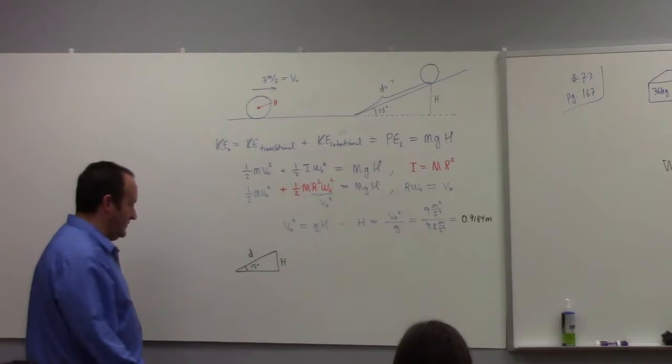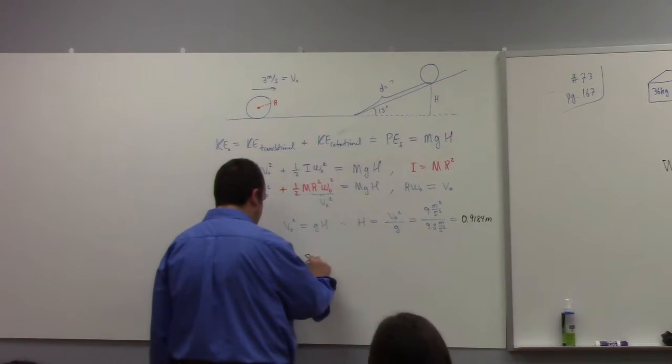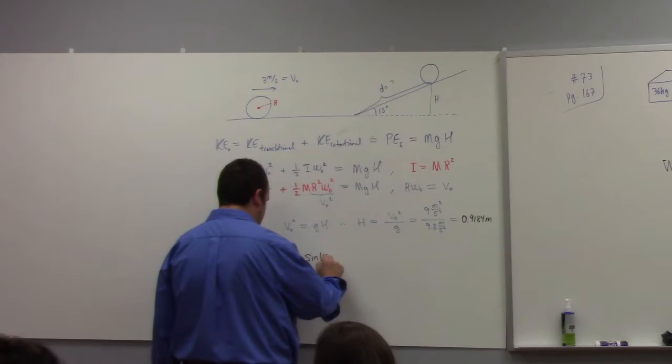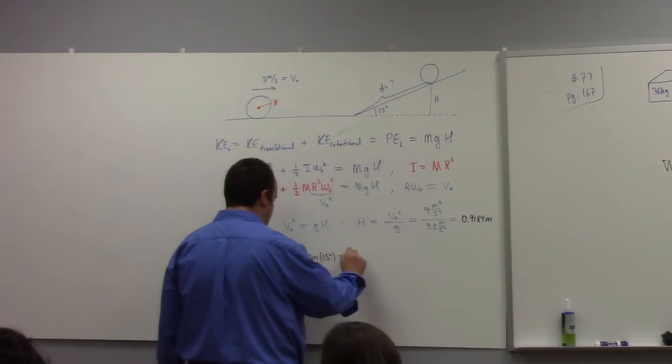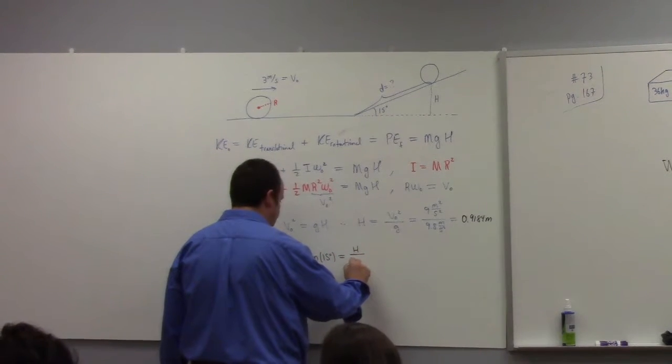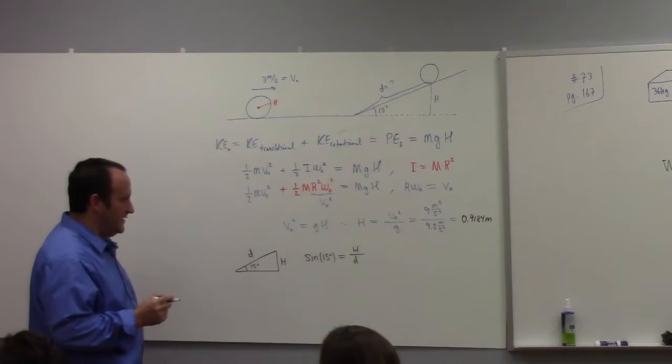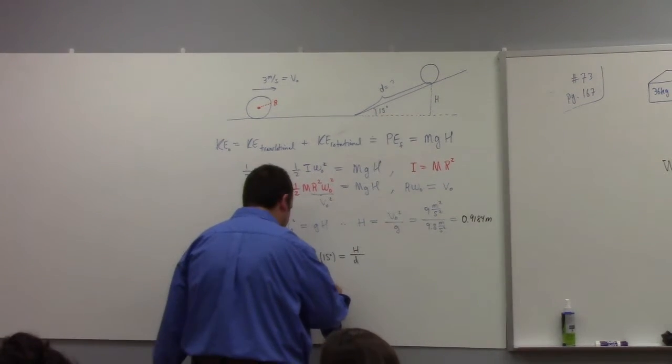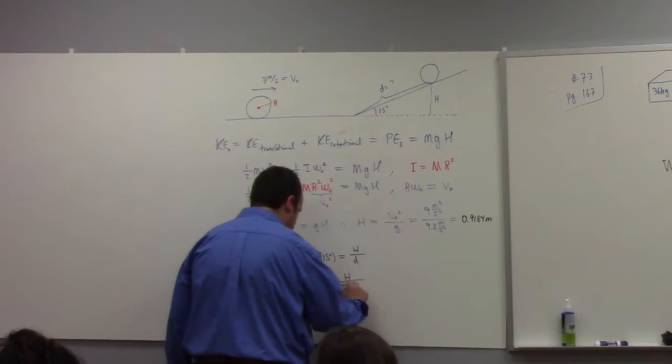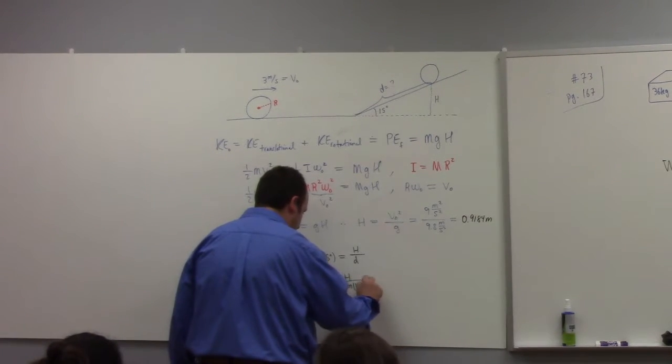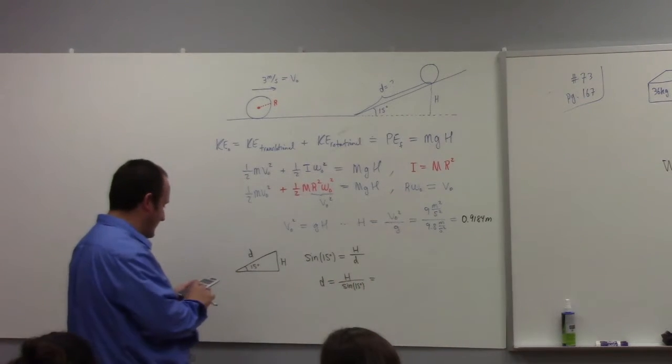Well, I like sine. Sine's a good choice. Sine of 15 degrees is equal to the opposite side, which is h, over the hypotenuse, which is d. So solve for what you're interested in here, which is d, is equal to h over sine 15. But we know h and we know how to calculate sine, so we're good to go.